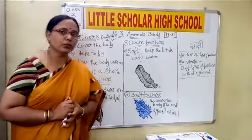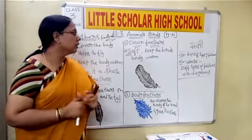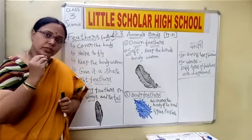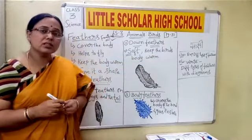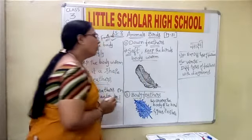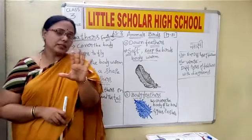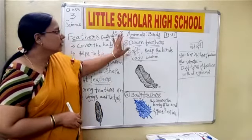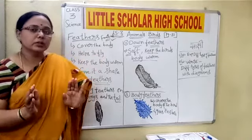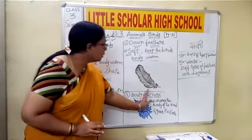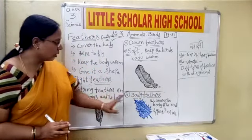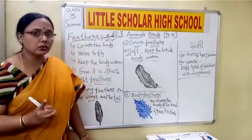The second type is down feathers. These feathers are soft in nature. Their function is to keep the bird's body warm. As we discussed, every organism has its own temperature to be maintained, and the down feathers help keep the bird's body at the particular temperature required for it to live and survive. This is how a down feather looks.